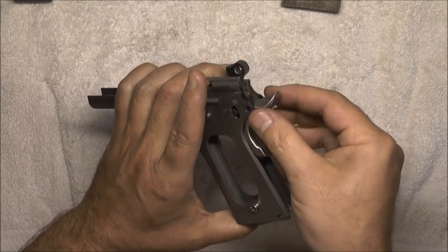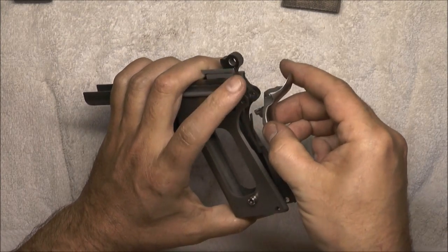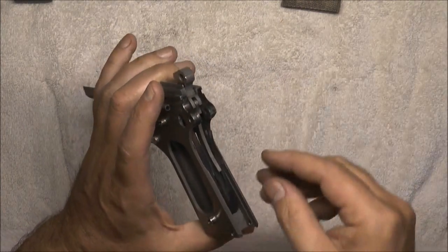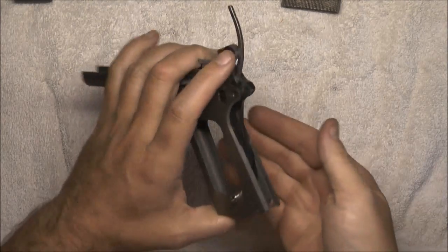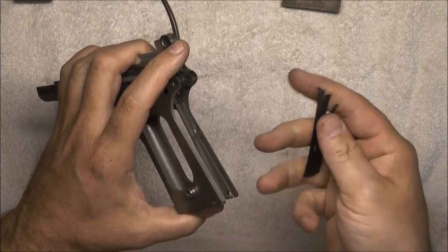So once we've got the mainspring housing pin out, we can drop the mainspring housing. That's clear. Then I can drop my grip safety out. Pull this strut up out of the way. And sear spring should drop out.